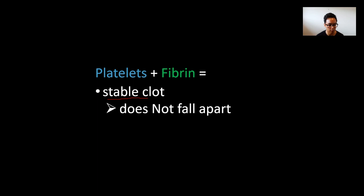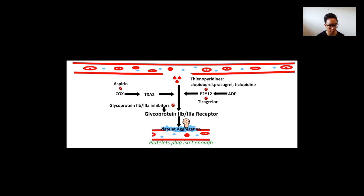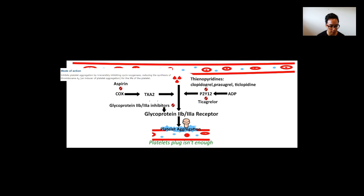We have two processes producing that stable clot. I've denoted where medicines work on the chart using tablet symbols, with red symbols indicating inhibition. Aspirin inhibits platelet aggregation by irreversibly binding to COX, reducing the synthesis of thromboxane A2. When we inhibit COX, we inhibit TXA2, and when we inhibit TXA2, we can't get platelet aggregation.